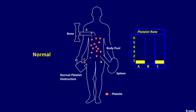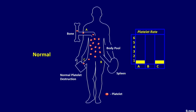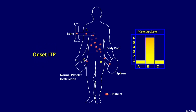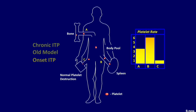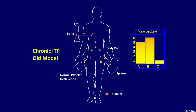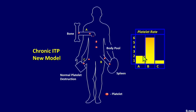In summary, platelets are made in the bone marrow, enter circulation, and after seven to ten days undergo apoptosis and are destroyed by normal turnover. In ITP, the spleen and possibly the liver result in the platelets being destroyed. The platelet count drops significantly. Contrary to what was thought for decades, the rate of platelet production may actually be reduced in ITP patients. So we have a high rate of platelet destruction and an inappropriately low rate of platelet production.